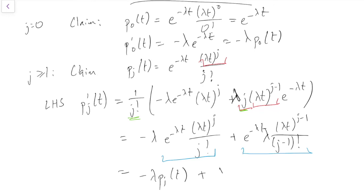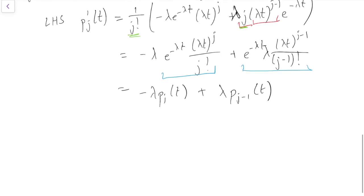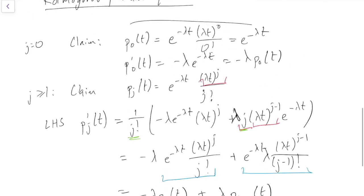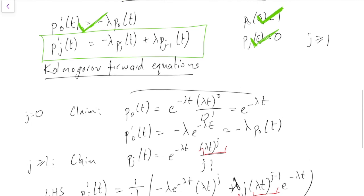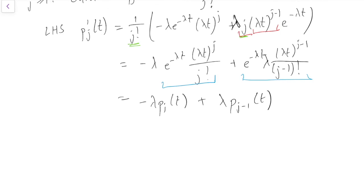Tidying up: the first term is minus λ times e to the minus λt times λt to the j over j factorial, which is minus λ p_j(t). The second term, with the j cancelling with the j factorial to leave j minus one factorial, gives plus λ times e to the minus λt times (λt)^{j-1} over (j-1) factorial, which is precisely λ p_{j-1}(t). So we've proved that the Poisson probability does indeed solve the Kolmogorov forward equations, showing that the infinitesimals definition gives us a Poisson process.